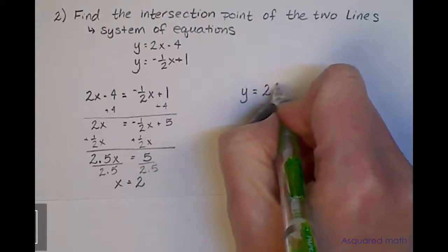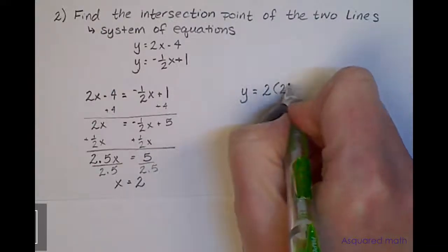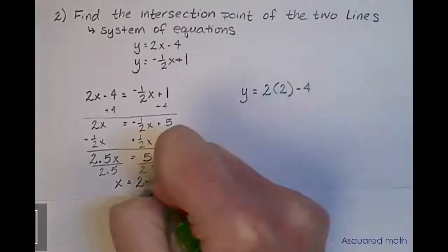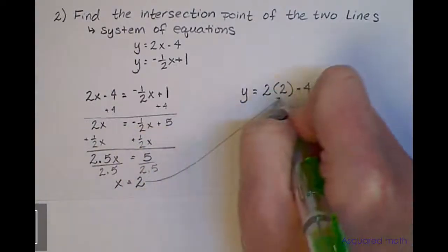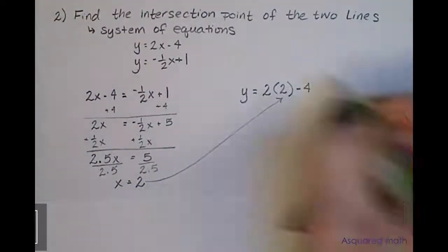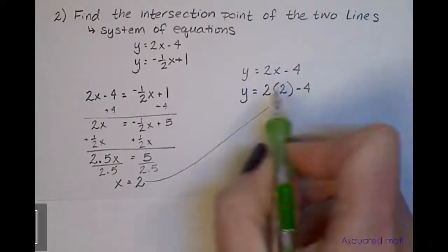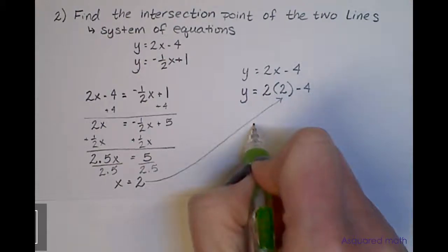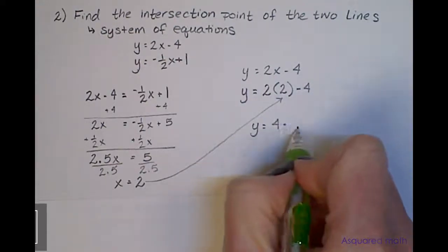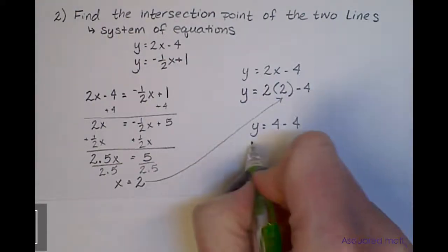I'm going to plug in this x value, so I have y = 2 times 2 minus 4. This came from the y = 2x - 4 equation. Now multiply through: y = 4 - 4, or y = 0.